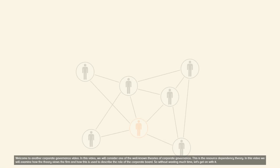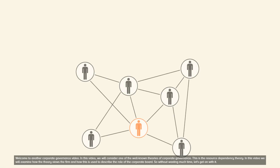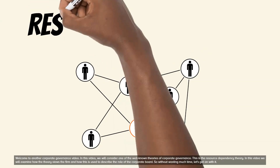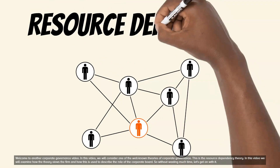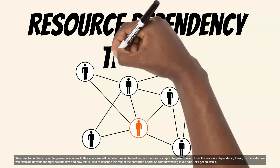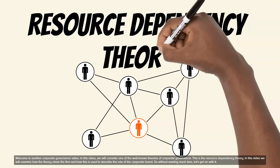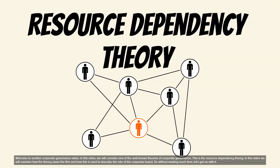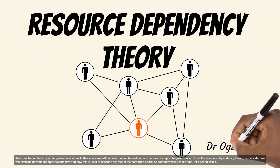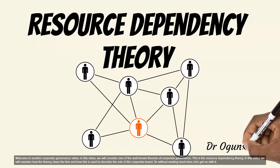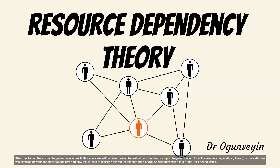Welcome to another corporate governance video. In this video, we will consider one of the well-known theories of corporate governance — the resource dependency theory. We will examine how the theory views the firm and how this is used to describe the role of the corporate board. So without wasting much time, let's get on with it.